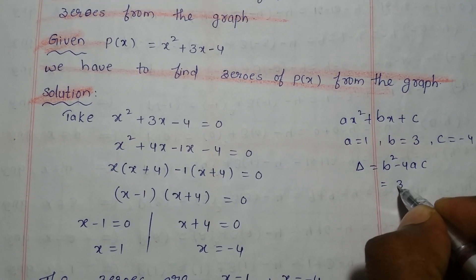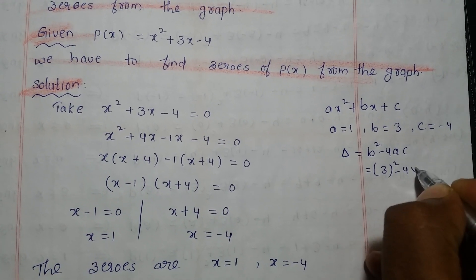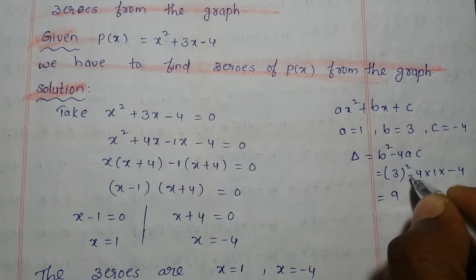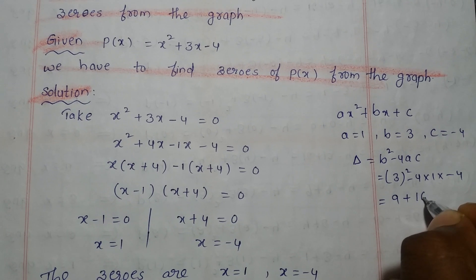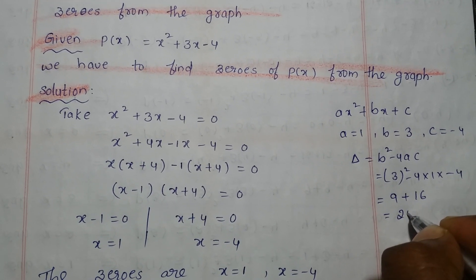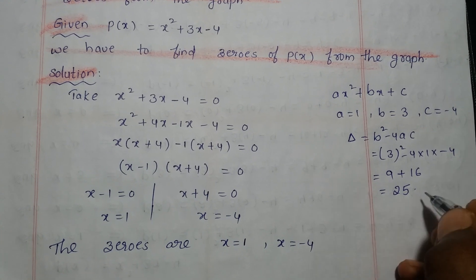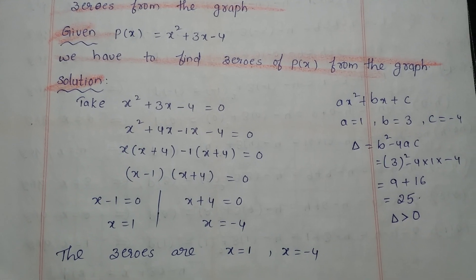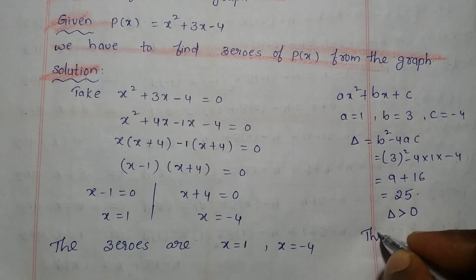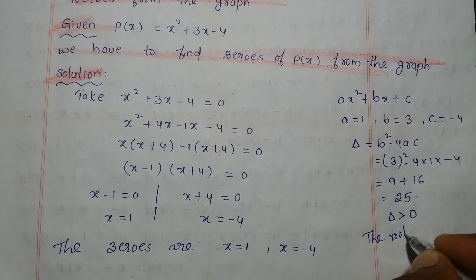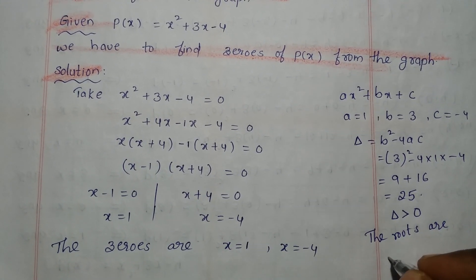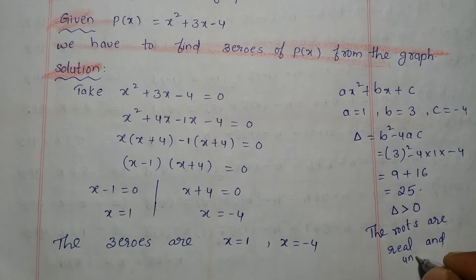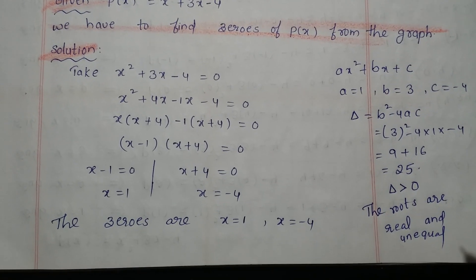The value of b is 3. So 3 square minus 4 into 1 into c, which is minus 4. 3 square is 9, minus into minus will be plus, 4 into 4 is 16. 9 plus 16 is 25. So discriminant is 25, which is greater than 0. The roots are real and unequal or distinct.